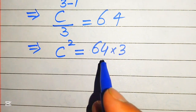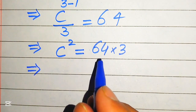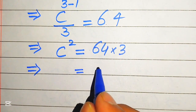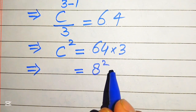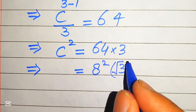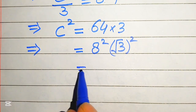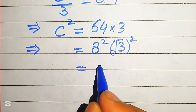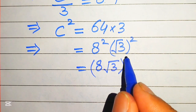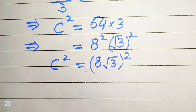In the next step we simplify the right-hand side. We rewrite 64 as 8 squared, and we write 3 as the square root of 3, whole squared. We then combine these two squares: it becomes 8 times square root of 3, whole squared. So on the left-hand side we have c squared equals 8 times square root of 3, whole squared.